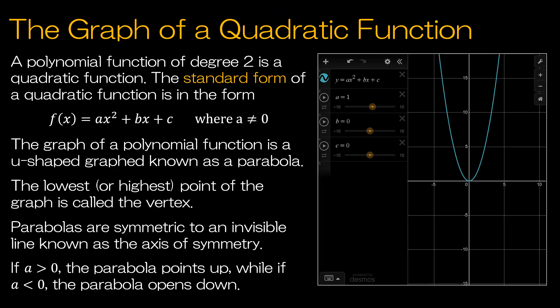Let's take a look at the graph of a quadratic function. A quadratic function, as we know, is a polynomial function. The standard form of the quadratic function is f(x) = ax² + bx + c, where a does not equal 0.